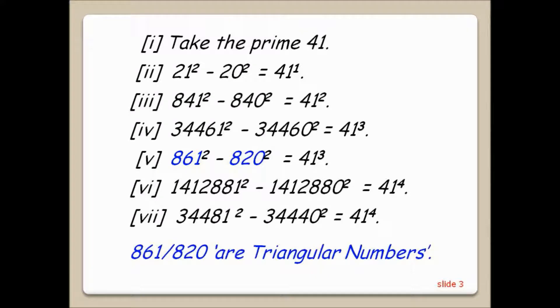1412881 squared minus 141280 squared equals 41 to the 4th. 34481 squared minus 3440 squared equals 41 to the 4th. 861, 820 are triangular numbers.